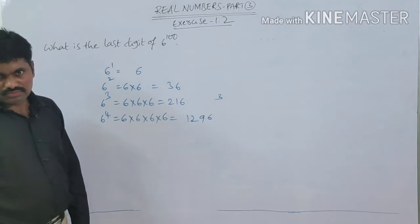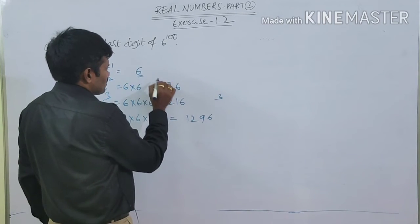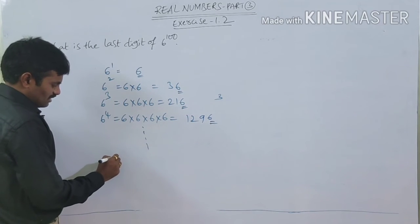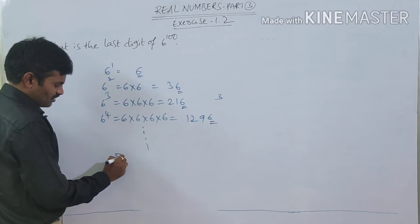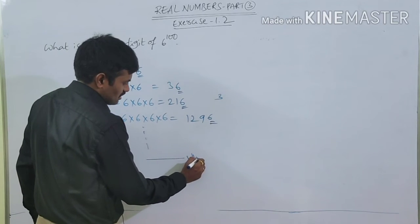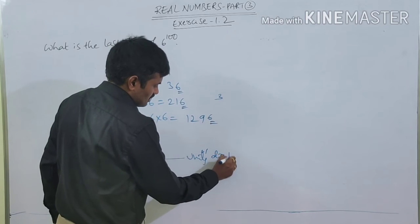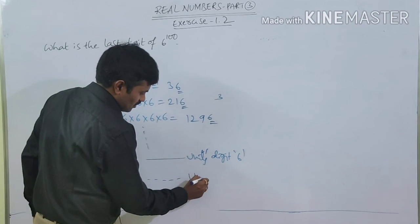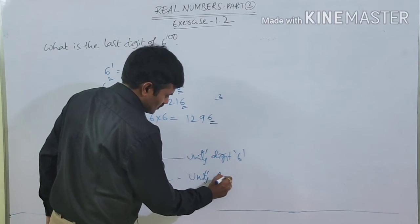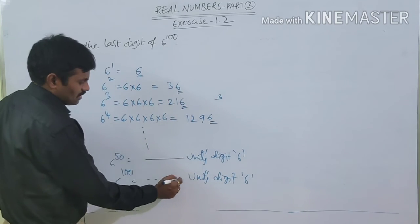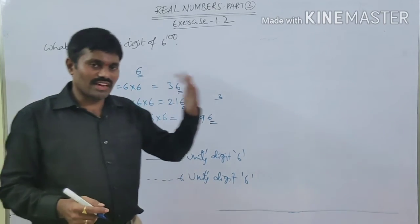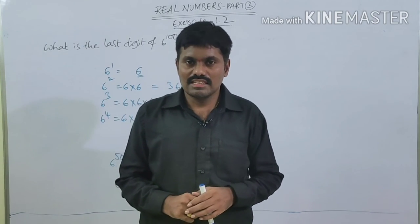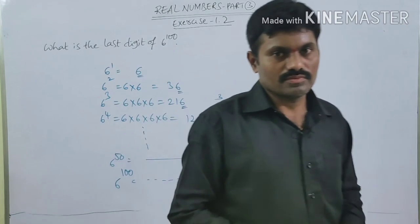If you observe, the last digit in this expansion is 6, here also 6, and so on. If you expand to any number — even 6^50 or 6^100 — you will get the unit digit as 6. So in the expansion of 6^100, we get the unit digit as 6 itself. That means 6^n always ends with 6. The unit digit of 6^n is 6 for any natural number n.